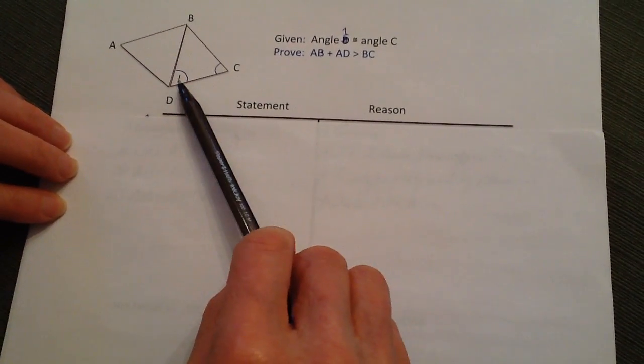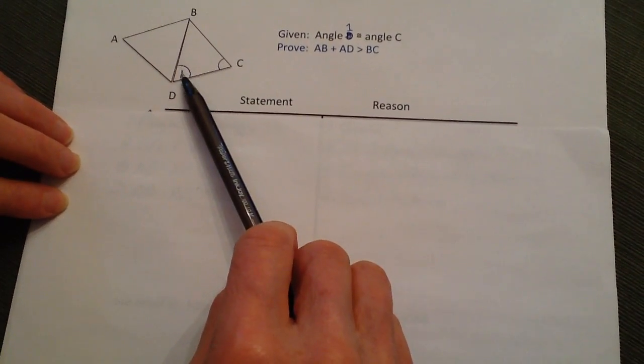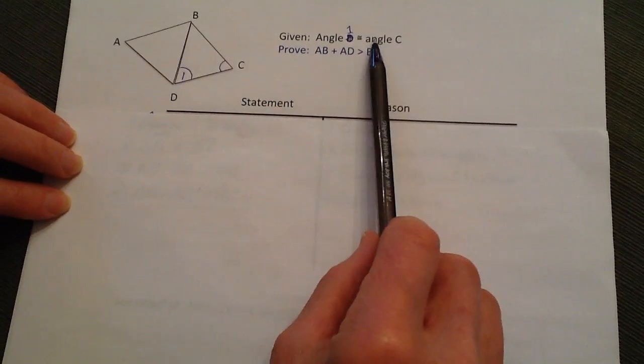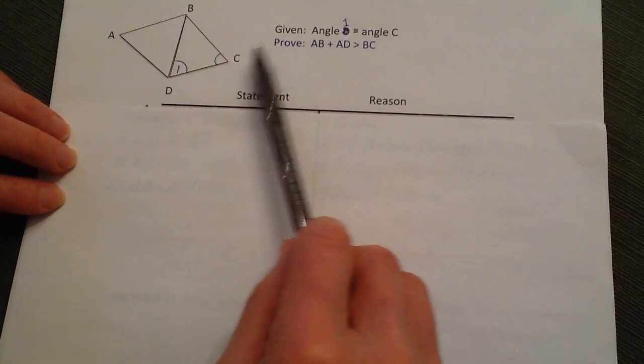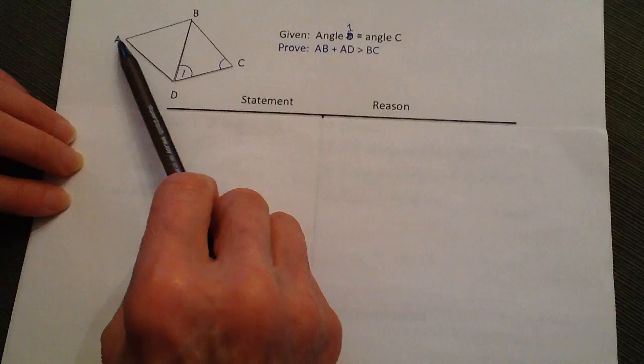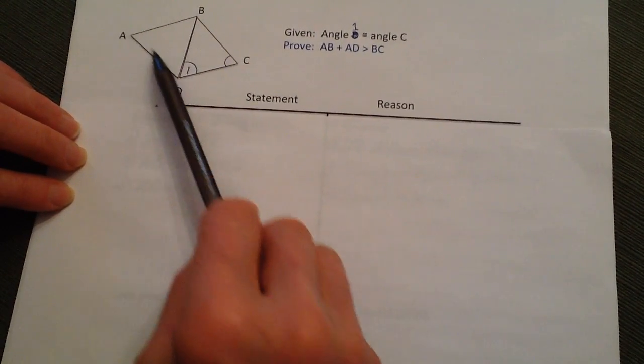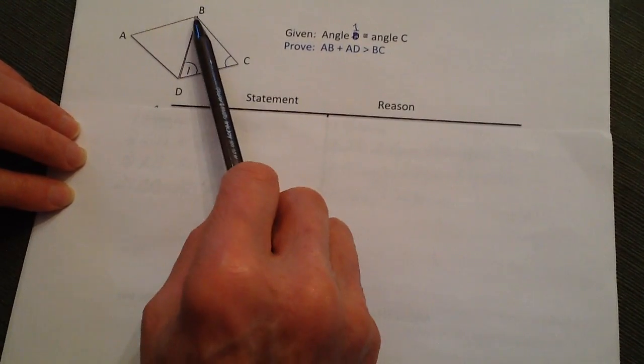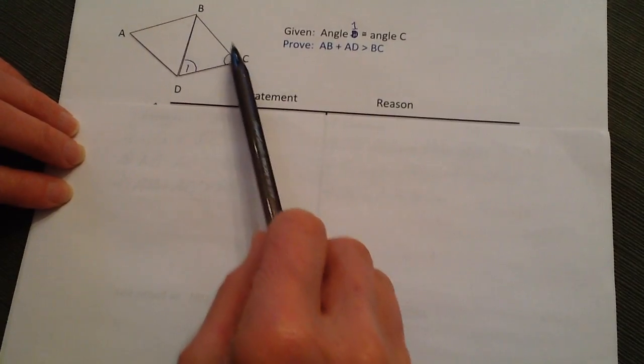And the first thing here, I've got angle 1 congruent to angle C. And so we want to prove that this leg AB plus AD is larger than this leg right here of BC.